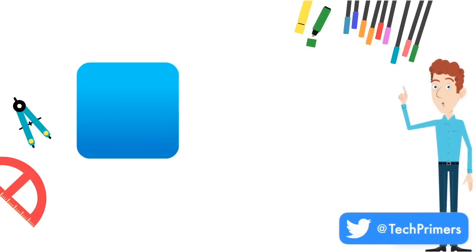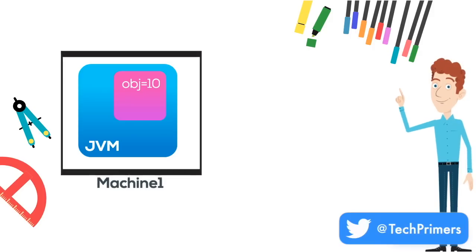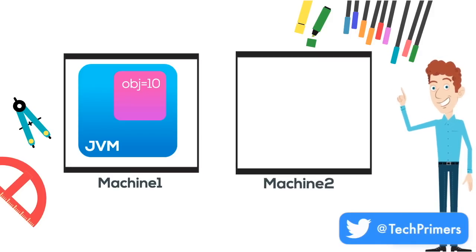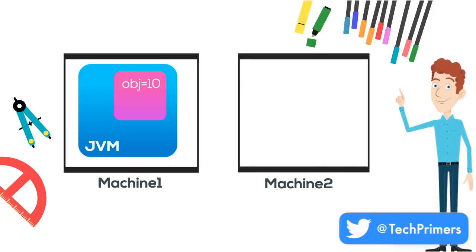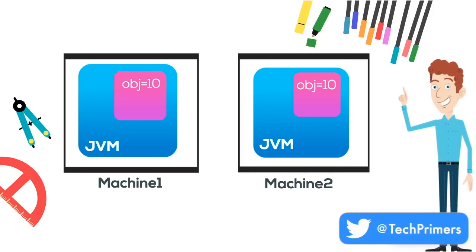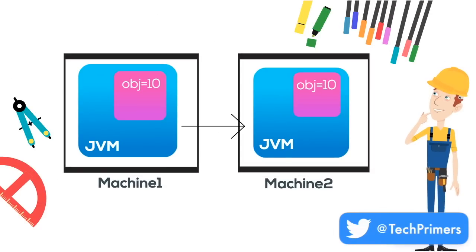Let's consider a JVM that has an object with a value of 10, running inside machine 1. This JVM needs to be recreated inside machine 2 with the same object value of 10. This is a typical example where we will be using serialization.